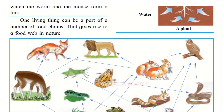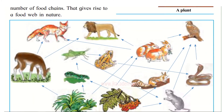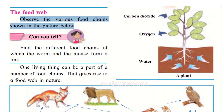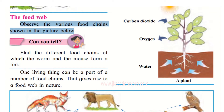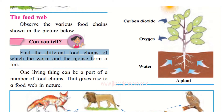Here is a picture showing all these animals as interdependent — follow the arrows. You will not just find one food chain; there are many food chains and all of them are dependent on each other. The question asks you to find the different food chains of which the worm and the mouse form a link.